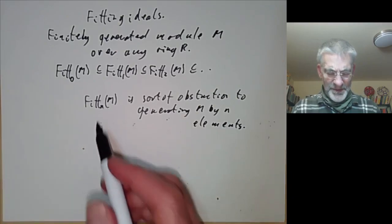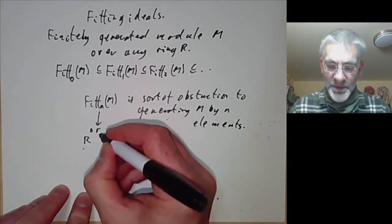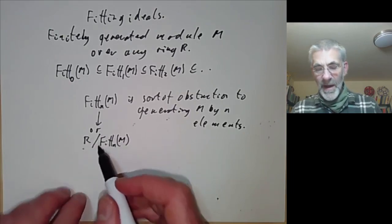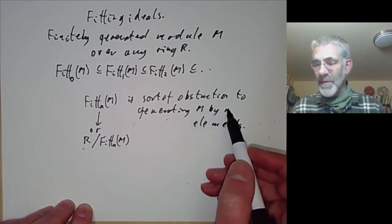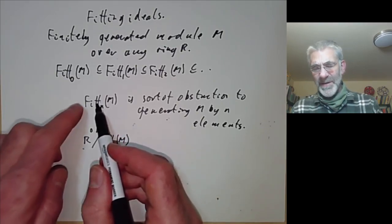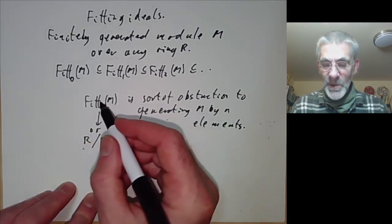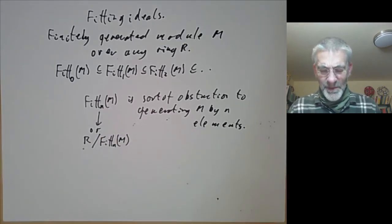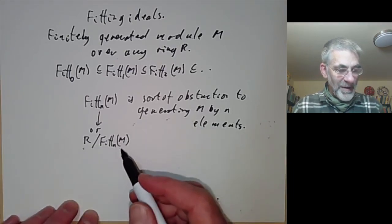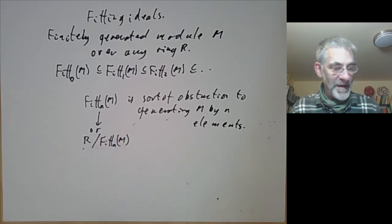It's not really an obstruction in the direct sense — people have got things a bit muddled up. Instead of working with the fitting ideals, it would really be better to work with the quotient by the fitting ideal. You take the quotient of R by the nth fitting ideal, which is a cyclic module. It's really this module which is the obstruction. If M is generated by N elements, then this quotient vanishes. So if M is generated by N elements, this isn't zero — it's equal to the whole ring R. As usual in mathematics, definitions and terminology have got a little bit muddled up, so for historical reasons we use the fitting ideal rather than the quotient, which would probably be more sensible.